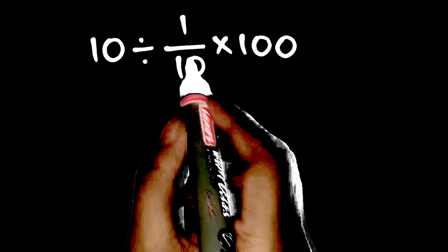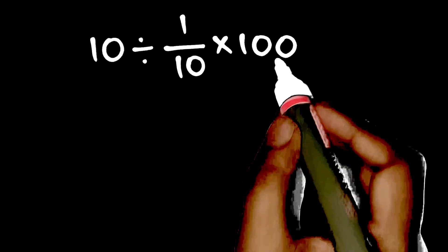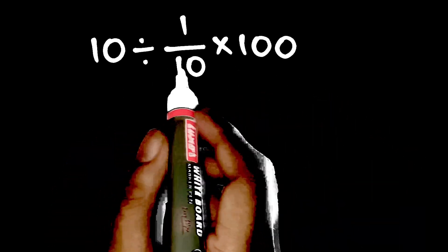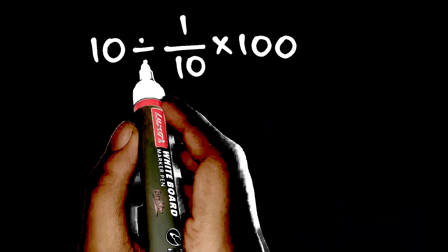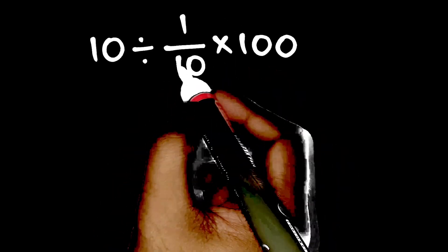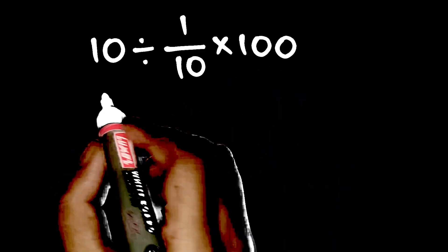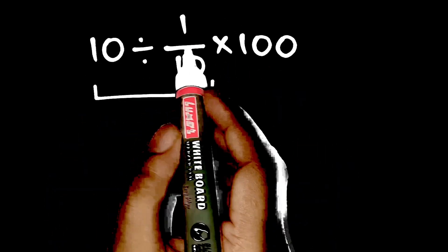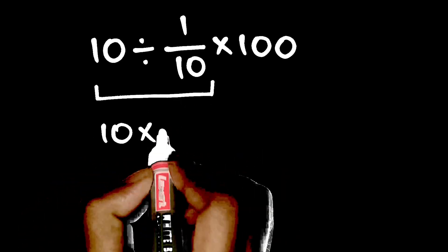Start with 10 divided by 1 tenth times 100. First, 10 divided by 1 tenth. Remember, dividing by a fraction is the same as multiplying by its reciprocal. That's keep-change-flip. So, 10 divided by 1 tenth becomes 10 times 10, which is 100.